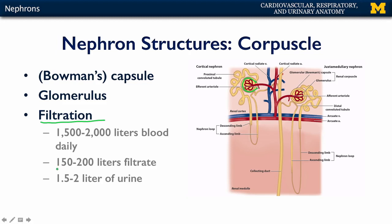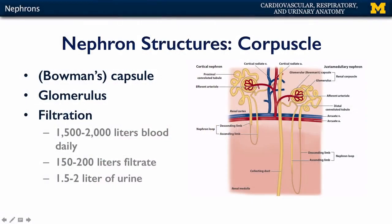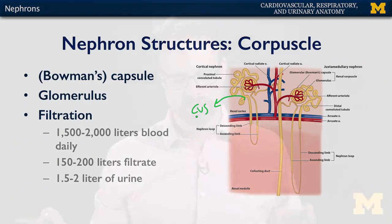If you can imagine losing 150 to 200 liters of fluid daily, that would be very problematic for your survival — you would be desiccated in no time. Luckily, we have tubular reabsorption, where we pull materials out of the filtrate and into the cardiovascular system to reclaim a lot of that filtrate, mostly water. The nephron, as such a dynamic filter, is able to go from 150 to 200 liters of filtrate to about 1.5 to 2 liters of urine on a daily basis — a phenomenal feat of physiology.